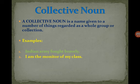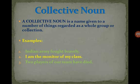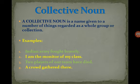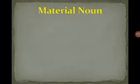More examples: I am the monitor of my class — here 'class' is a collective noun. Two players of our team — 'team' is a collective noun, 'player' is a common noun, and names like Tendulkar, MS Dhoni, Virender Sehwag are proper nouns. A crowd gathered there — 'crowd' is a collective noun because it is a collection.